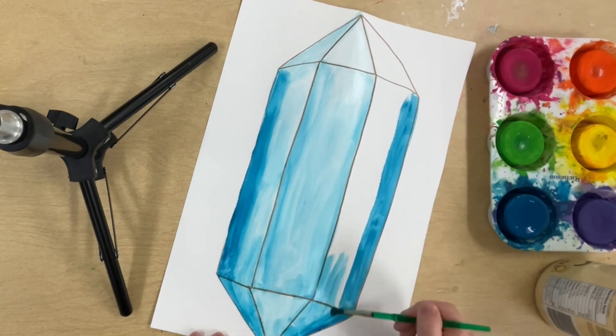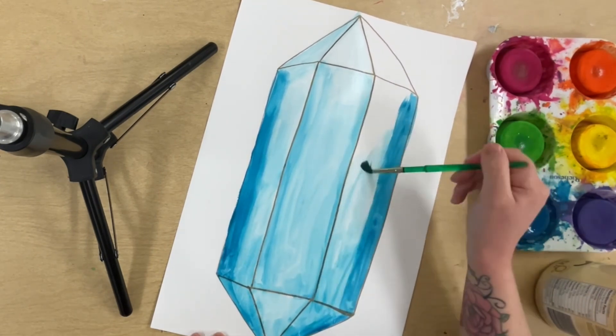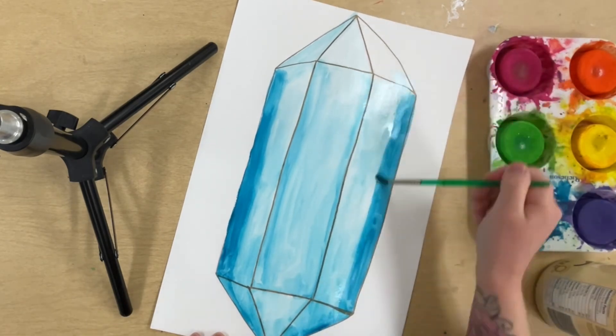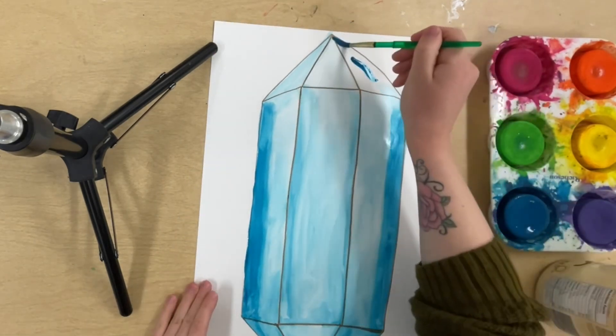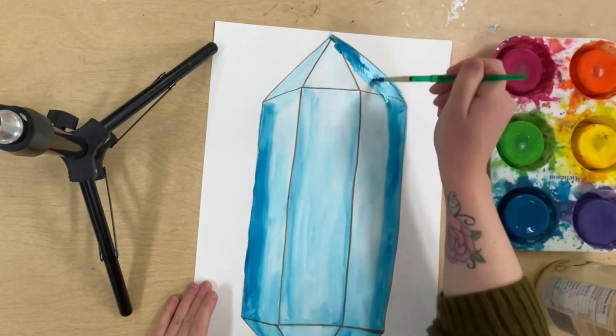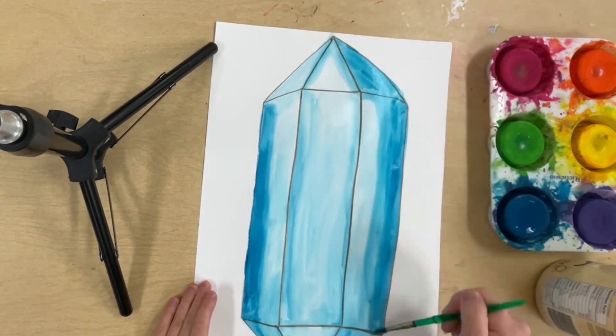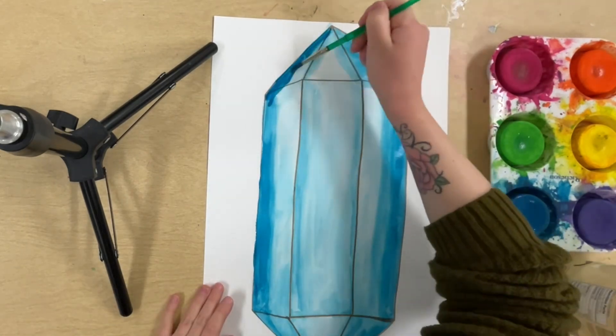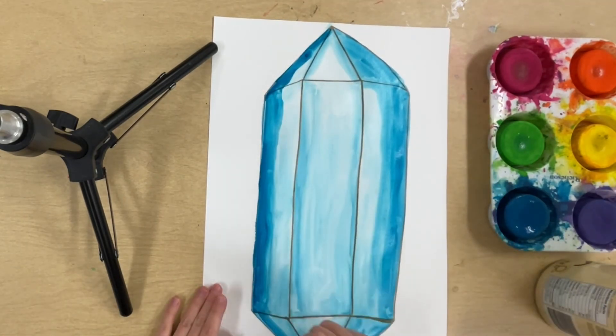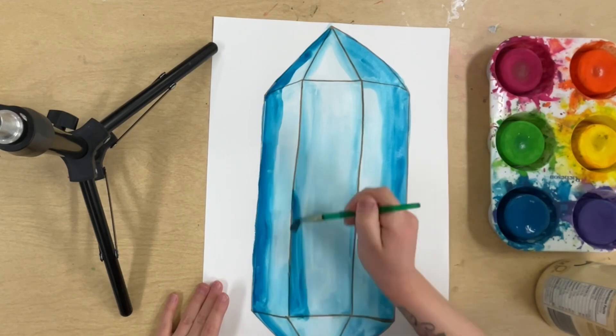For the super light values, sometimes I'm just dipping my paintbrush in the water and without getting paint, just kind of spreading it over some of the areas that were already painted, just to make those values a lot lighter. So again, more water, less paint—lighter.